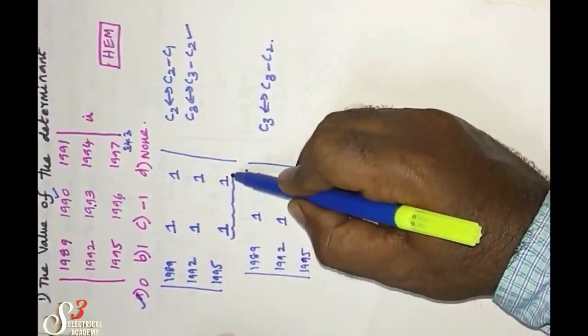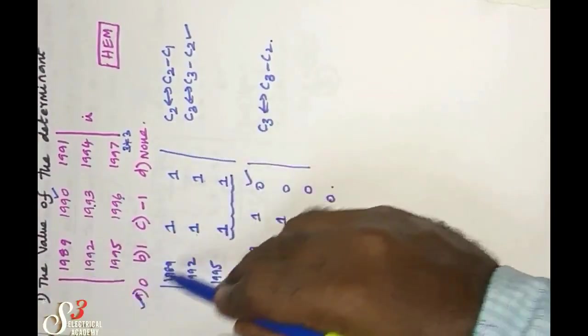The general principle is: if any two column values are the same, then automatically the determinant will be zero.